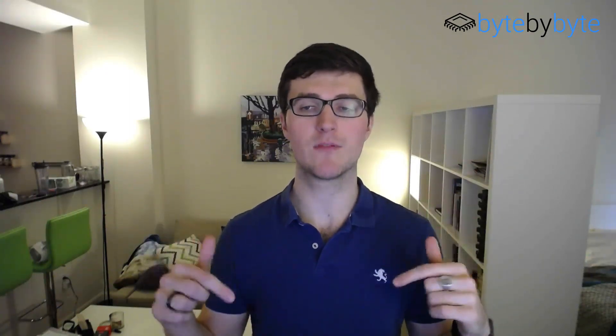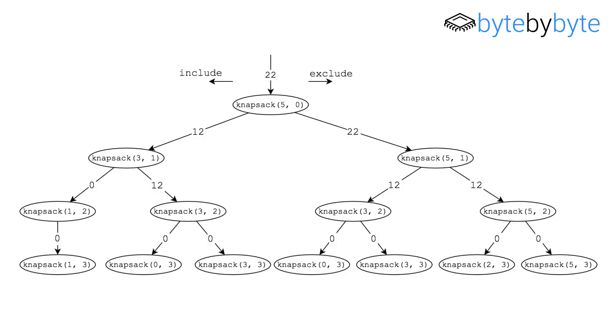So if we see that a problem has these two properties, we know we can use dynamic programming. The best way to see if a problem has both properties is to draw a picture — specifically, a tree like this one, where you draw out all of the recursive function calls. In this tree we can see multiple nodes with the same values, which means overlapping subproblems, and because it's recursive we know it has optimal substructure. So we know we can use dynamic programming for this problem.